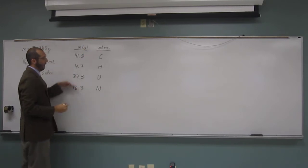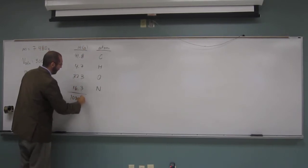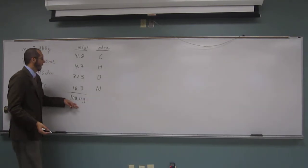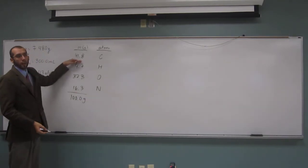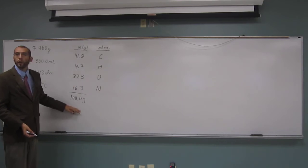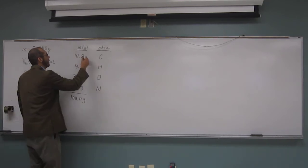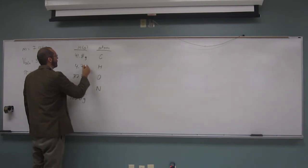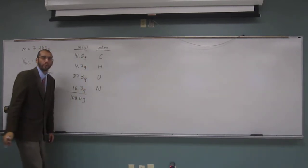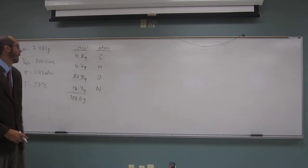So if we have 100.0 grams total, then 41.8% of 100 is 41.8 grams. We can change the units of all of these to grams instead of percentages — grams for carbon, hydrogen, oxygen, and nitrogen.